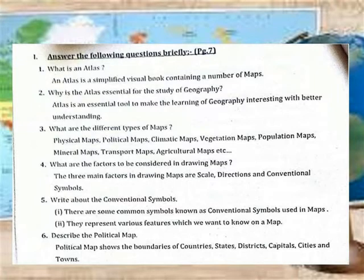The three factors in drawing maps are scale, direction, and conventional symbols. There are some common symbols known as conventional symbols used within maps. They represent various features which we want to know on a map.